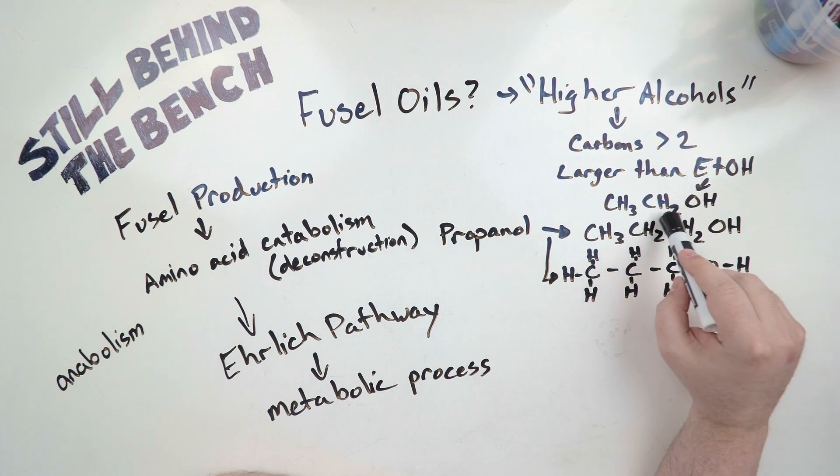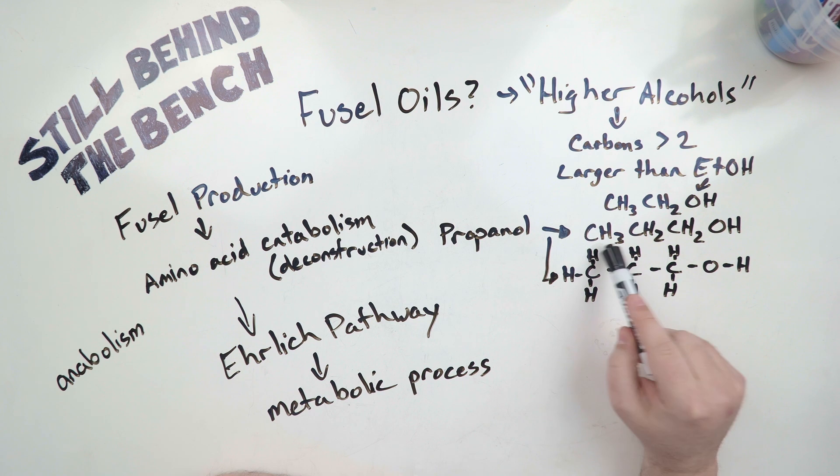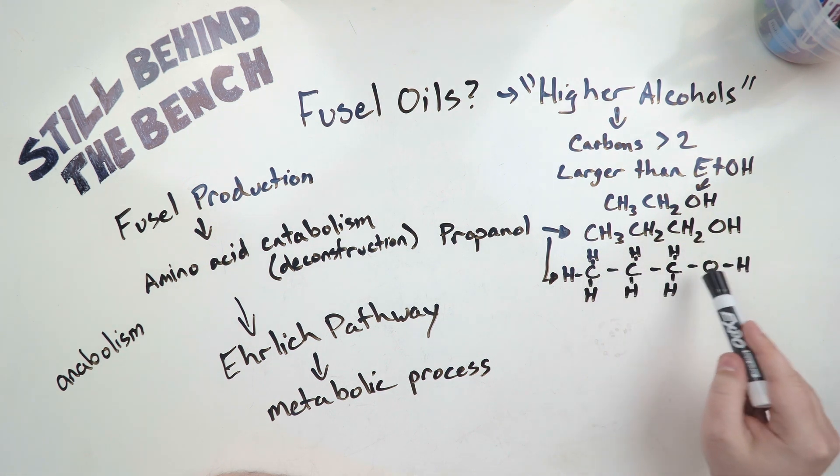So ethanol is CH3CH2OH, so it just has two carbons. You go up by one carbon to propanol CH3CH2CH2OH, so three carbons in a chain, and now all of a sudden it's a higher alcohol.